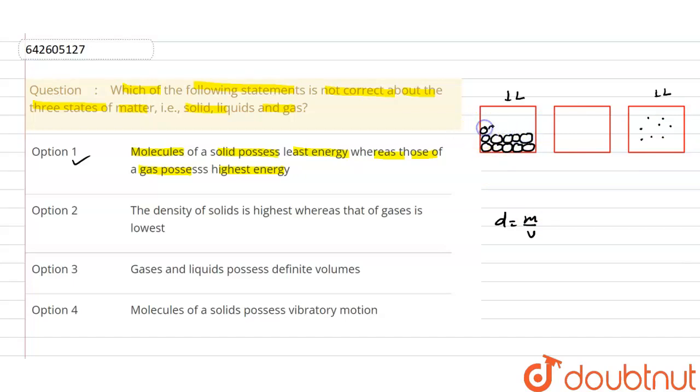the particles come closer, they will have more force of attraction, they will be contained closer. In case of gas they will be separated, they will have least force of attraction so their mass will be less because less number of molecules will be contained in this container in one liter. So from here we